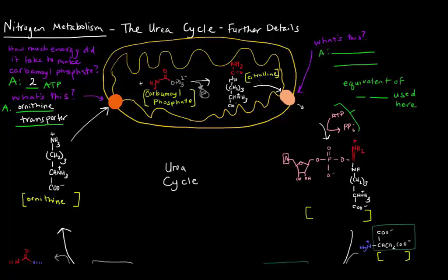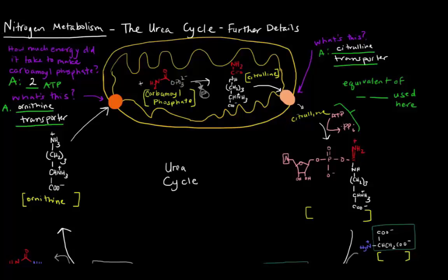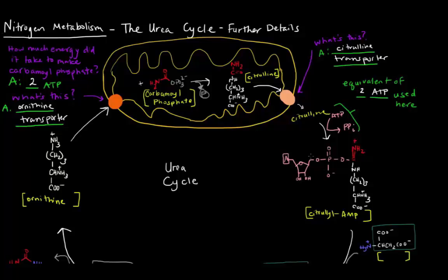Citrulline is in the liver mitochondrial matrix and it needs to leave and get into the cytosol. In order to do that, it needs this citrulline transporter here. Once that citrulline is out in the cytosol, we're going to use an ATP and turn it into a pyrophosphate — so the equivalent of two ATPs is used in this step — and we create a molecule called citrulline-AMP. It looks partly like citrulline with an AMP attached at this carbon up here.